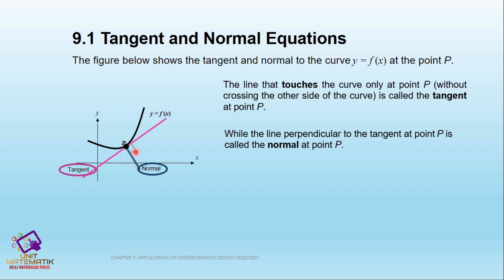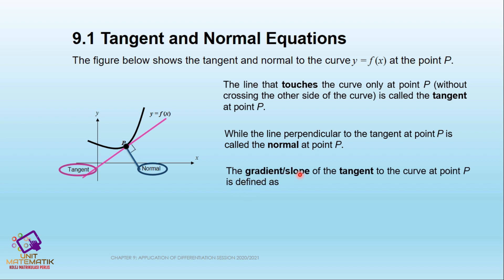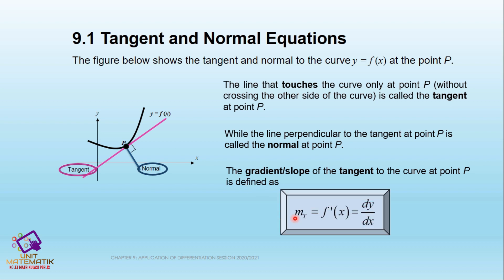You need to make sure that the angle at point P where the tangent and normal meet is 90 degrees. Therefore, the gradient or slope of the tangent to the curve at point P is defined as mt (where t stands for tangent), which equals f'(x), the first derivative of f, which is equal to dy/dx.